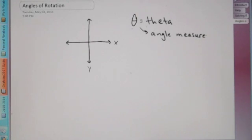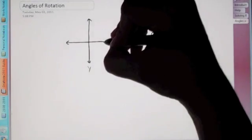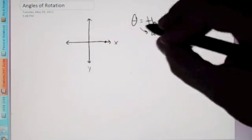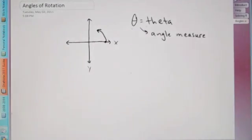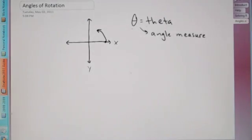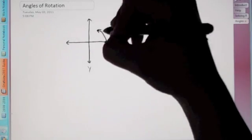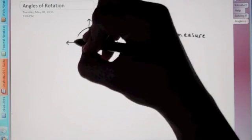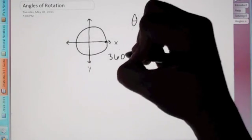When we apply an angle on an x-y coordinate, we always start on the positive x-axis, and we rotate counter-clockwise. If we're given a positive angle, we rotate counter-clockwise. The thing to know is that if I were to go all the way around, that would be 360 degrees.